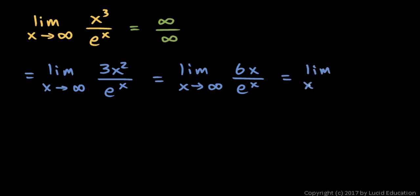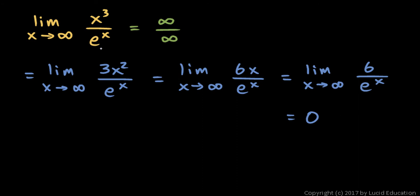This will be the limit as x approaches infinity of the derivative of the numerator, which is 6, over the derivative of the denominator, which is e to the x. Now this we can evaluate. As x gets large, the denominator grows without bound and the numerator does not. So we have 6 over something that is getting infinitely large, and that evaluates to 0. So the limit is 0.